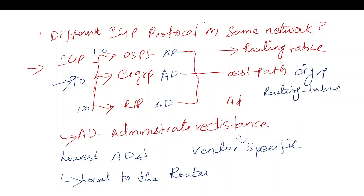Each protocol has a different AD value. The static route has an AD of 1. You can change the AD value — yes, you can modify the administrative distance. If you go to a dynamic routing protocol, you can configure the static route and adjust the administrative distance value. This allows you to influence which route is preferred. The AD is local to the router and is the main concept in route selection. You can run multiple protocols and manipulate the AD locally on each router.